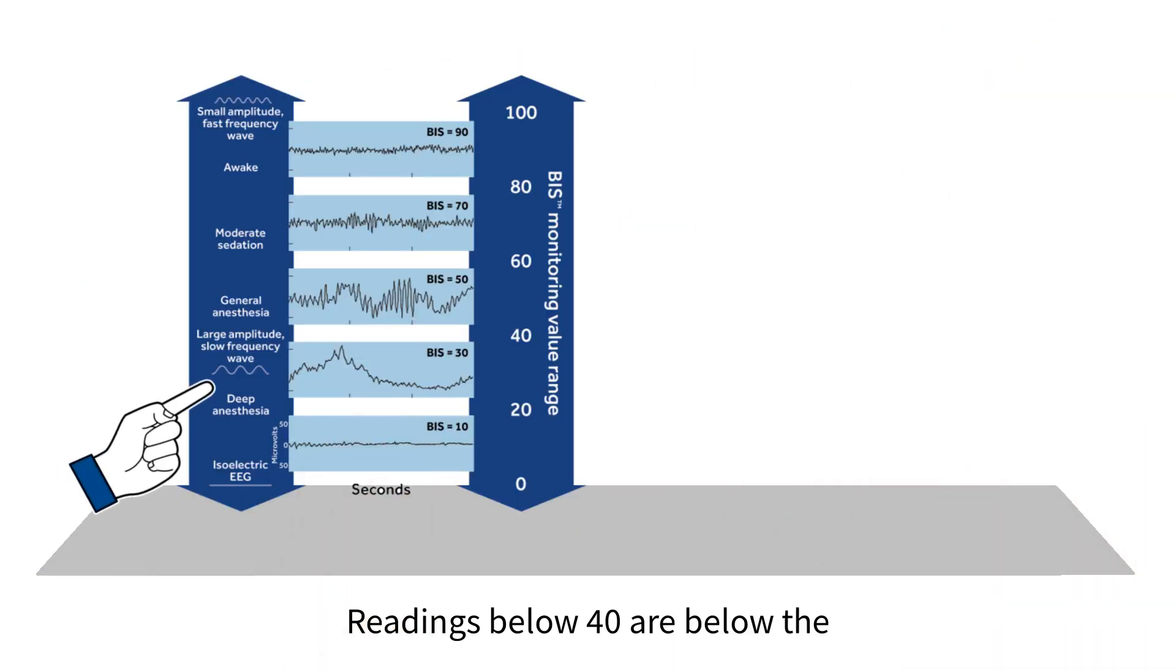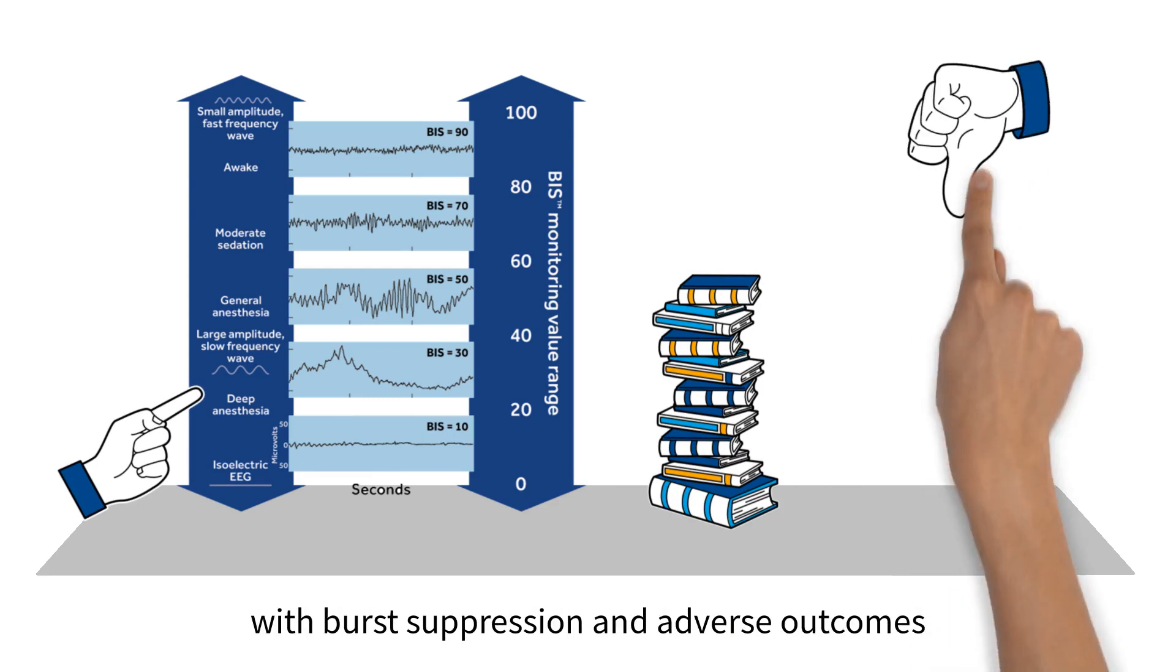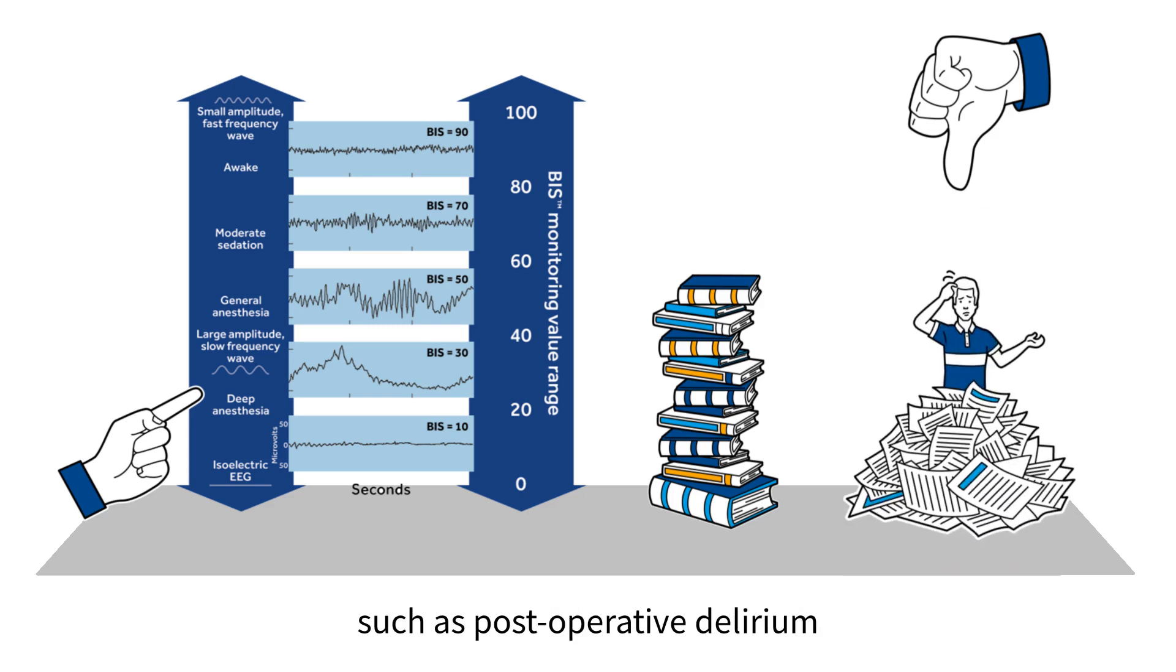Readings below 40 are below the recommended range. While these values still correspond with general anesthesia, studies indicate that unnecessarily deep levels of general anesthesia are associated with burst suppression and adverse outcomes such as post-operative delirium.